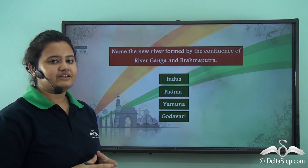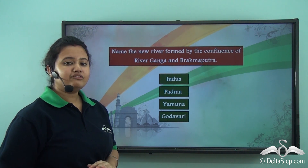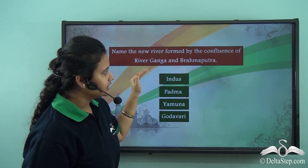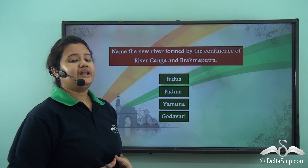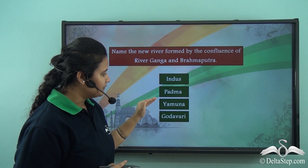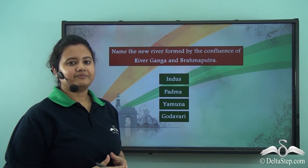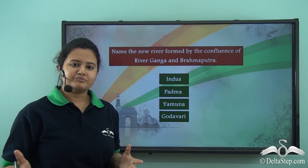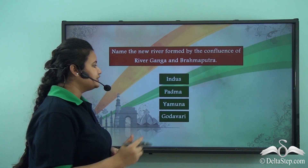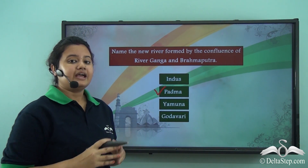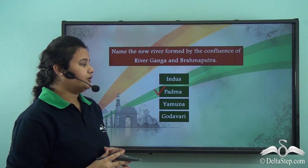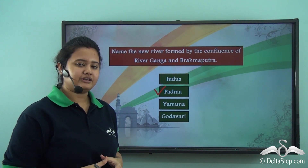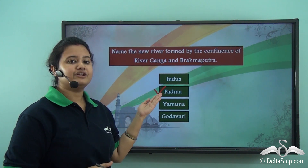Before proceeding with our lesson, let us answer this: name the new river formed by the confluence of River Ganga and Brahmaputra. The options are Indus, Padma, Yamuna, and Godavari. We just read that River Padma is the name of the new river formed by the confluence of River Ganga and Brahmaputra in Bangladesh — so the correct option is River Padma.